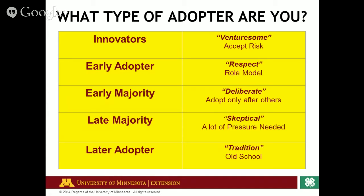Our late majority are very skeptical. A lot of pressure is needed for them to try something new — this is a group where it's a last resort; they have to accept this. And then finally, we have our late adopter — these are our traditional, old school kind of people. You'll hear them say, 'we've done it this way for so many years and it's always worked, so why do we need to change now?' That doesn't mean they'll never change, it just means they're really set in their ways and it's going to take a lot of pressure to get them to change.